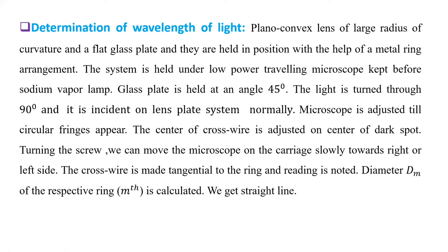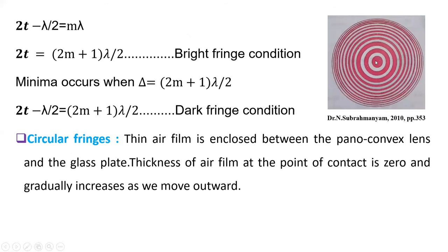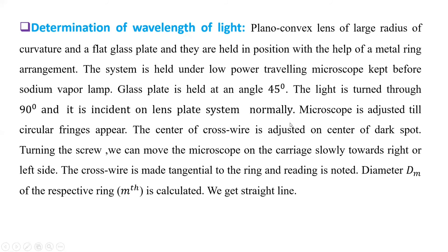So, center of cross wire is adjusted on the center of that dark spot. So, we can move the microscope on the carriage slowly towards right or towards left side. So, cross wire is made tangential to the ring and the reading is noted.